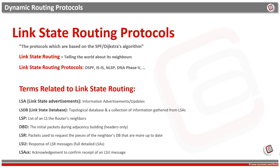Link state routing protocols have some important terms to understand their methodology and way of working. LSA is the Link State Advertisement — a small packet of routing information shared between routers running a link state routing protocol. LSDB is a topological database and a collection of information gathered from the LSAs. LSP is a packet of information generated by a network router in a link state routing protocol that lists the router's neighbors.